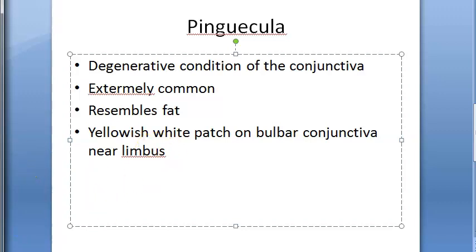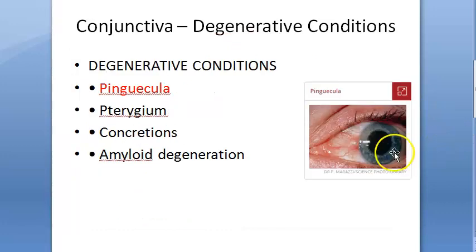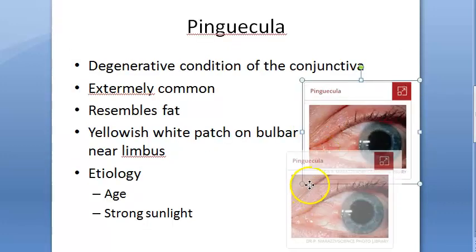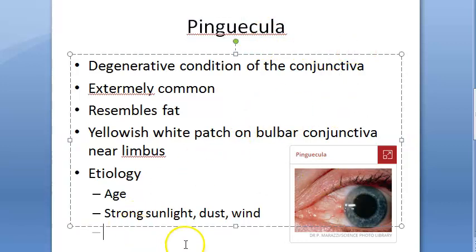The exact etiology of pinguecula is not known. It has been considered to be due to age change. It occurs more commonly in persons who have been exposed to strong sunlight, dust, and wind. Earlier, it was thought that pinguecula could become a pterygium, but now they are known to be distinct disorders — pinguecula will not become pterygium; both are independent conditions.